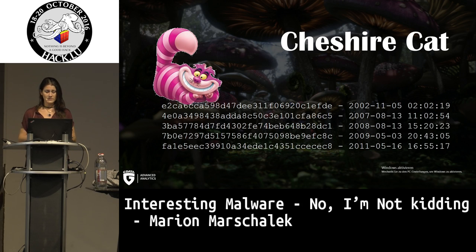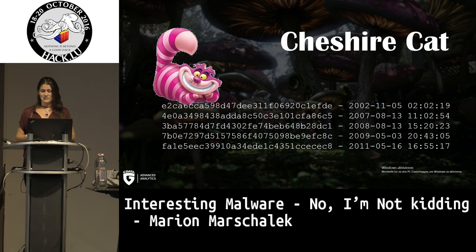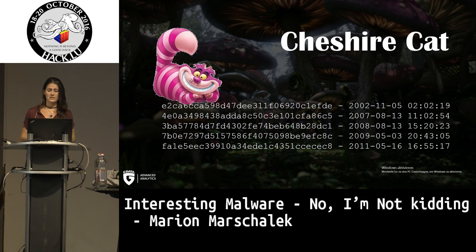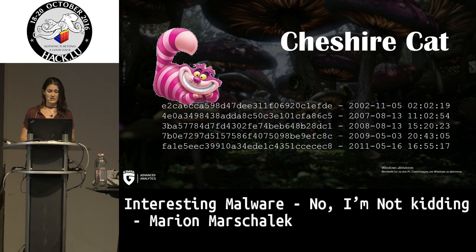If you look at these timestamps very closely, there are two from 2007 and 2008 which land on the same day. This usually is an indicator that people have forged timestamps on their binaries, so I wouldn't take these compile timestamps as fully trustworthy. But what is interesting is that although the timestamps might be forged, they have indeed been written for very old operating systems — I'll tell you about this in a minute.